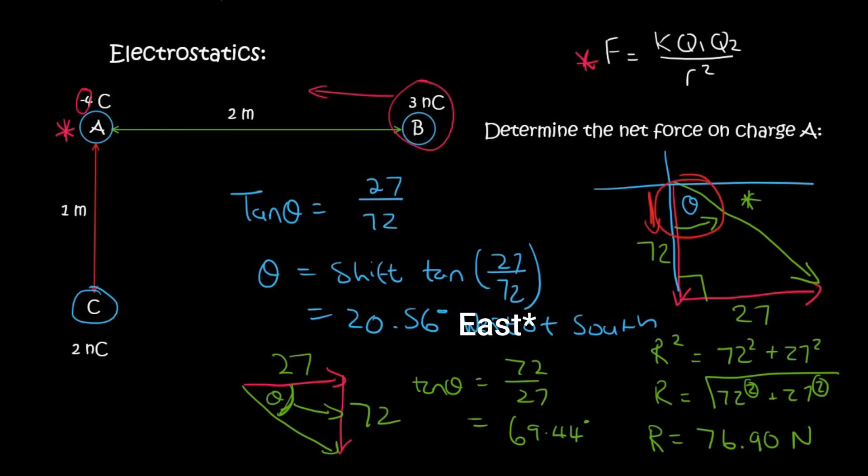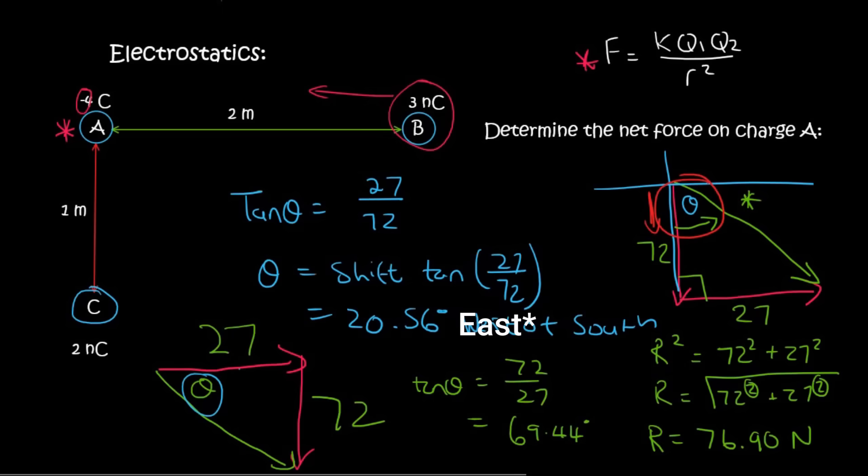But now your direction is going to be slightly different. So this angle here is going down like that. So that's south. So I can say south of, and it's south of this line going to the right, which is the west line. And so some students might get an answer of 20.56 west of south. Some will get an answer of 69.44 south of west. Both of them are the same.